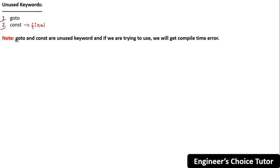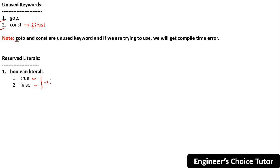Now for reserved literals: we have boolean literals and a reference literal. The boolean literals are true and false, which are the two possible values for the boolean data type. The reference literal is null, which is the default value for object references.